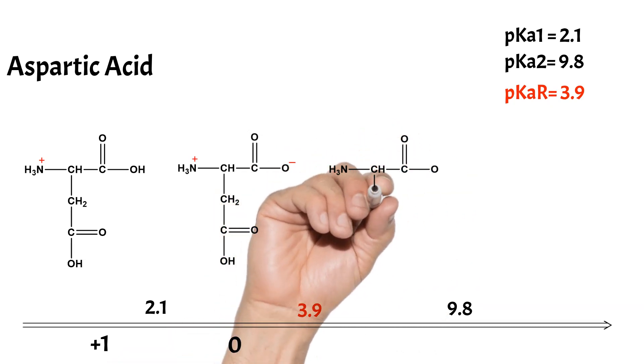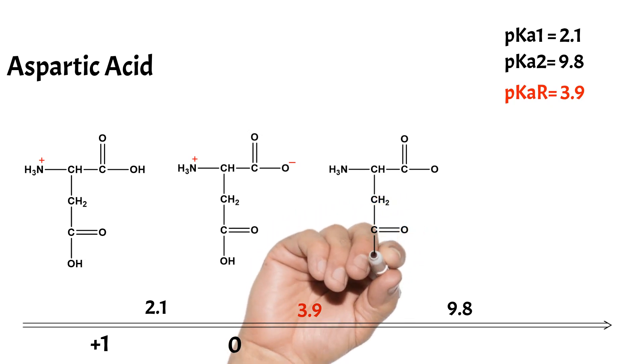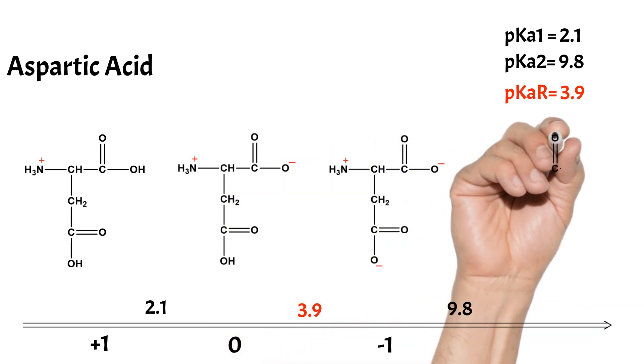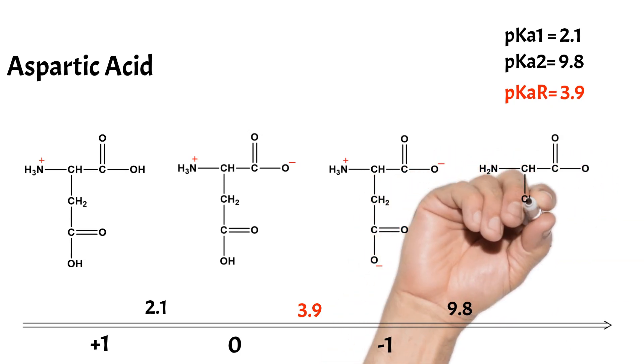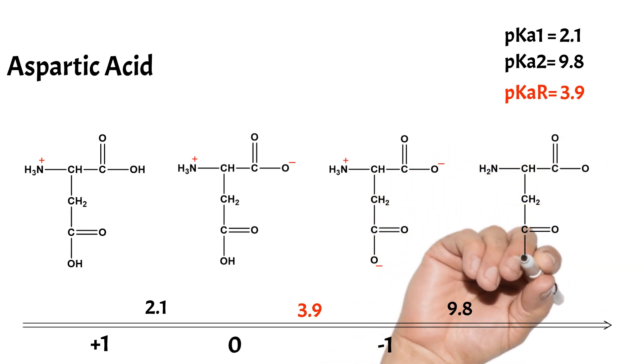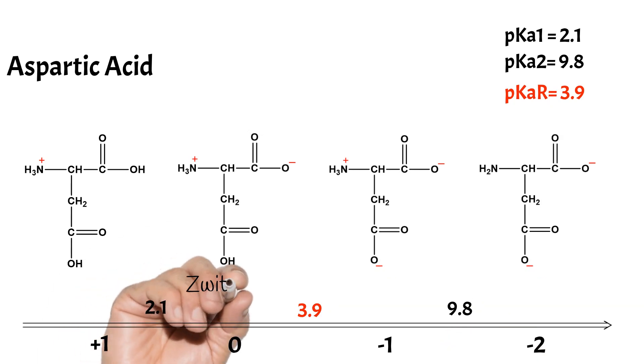At pKr value, the side chain carboxyl group loses its proton and the net charge now is minus one. And at pH value equal to pK2, the amino group will lose its proton, leaving the net charge at minus two. As we see, the zwitterion is between pK1 and pKr, the pK values for the two carboxylic groups.